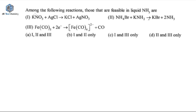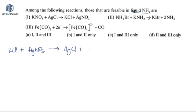The next question was again asked from inorganic reactions. It asks which among the following reactions are feasible in liquid ammonia. The first reaction is KNO3 treated with silver chloride giving KCl plus AgNO3. The well-known version of this reaction is: KCl treated with AgNO3 gives AgCl — a white precipitate — and KNO3.